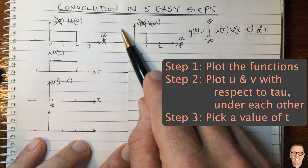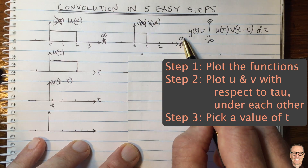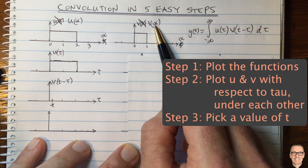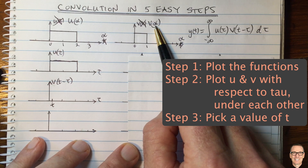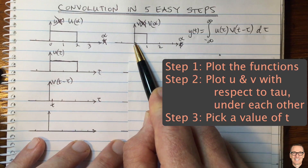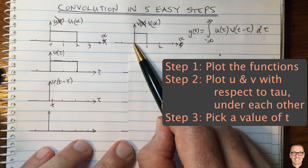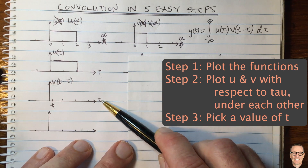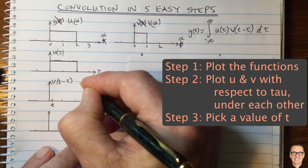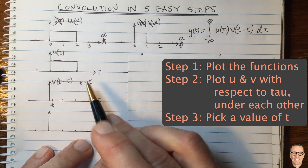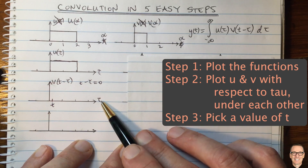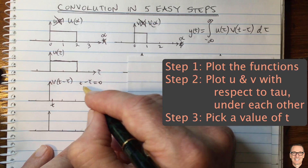From the graph of function v, when alpha equals zero we get a transition. Alpha is the thing in the brackets — you'll hear me use that phrase quite often. So when the thing in the brackets equals zero, we get that transition. For our function v of t minus tau, the thing in the brackets is t minus tau. When t minus tau equals zero, we get the transition — so we rearrange and get tau equals t. On our plot, when tau equals t, that transition occurs.